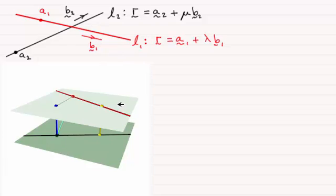Now I've drawn these two lines L1 and L2 on two parallel planes and also marked on the fixed known points A1 and A2 here.